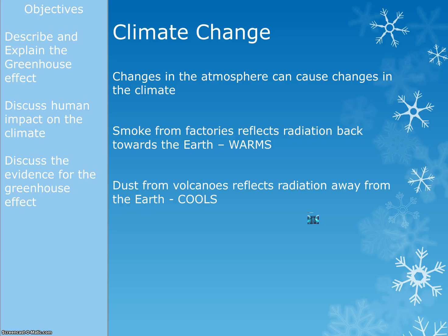So we've talked about the greenhouse effect; the next thing is climate change. The greenhouse effect can lead to climate change — the two things are slightly different. Climate change is basically the idea that changes in our atmosphere can cause changes in the climate, and remember, climate is about weather over a long period of time — it's about looking at the trend, not just looking out the window. Two effects the exam board wants you to know: smoke from factories can reflect infrared radiation back towards the Earth, having a warming effect on the climate; whereas dust from volcanoes reflects radiation away from the Earth, which can have a cooling effect on the atmosphere.